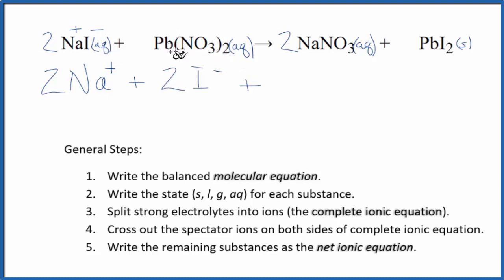And then for lead, we really have to look at what it's bonded to since it's a transition metal. So I know that the nitrate, the whole thing, has a 1 minus charge. There are two of them. Lead has to have a 2 plus charge. That's why we called it lead-2 nitrate. So I have the lead-2 ion, Pb2+, plus I have 2 nitrate ions. And those are the reactants in our net ionic equation.